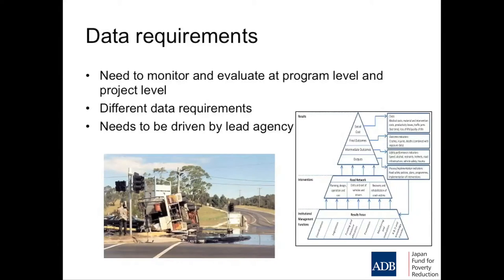Back to our data needs diagram. We talk about what we do — the interventions: more speed cameras, more police hours on enforcement, more use of roundabouts. We talk about the intermediate measures: what were the changes in behaviour — did speeds reduce, are people now driving slower? What were the crash outcomes? What were the social outcomes and medical costs? We need to monitor at programme level — for a national strategy targeting a 50% crash reduction — as well as at project level, for individual roundabouts or speed cameras. This process needs to be driven by a lead agency. Someone has to take responsibility.